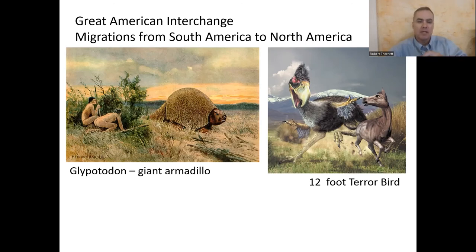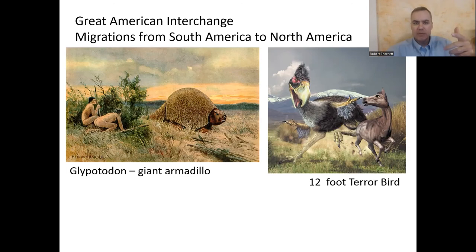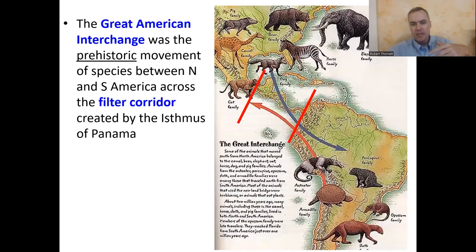They say humans were one of the main reasons that mammoths went extinct — humans hunted mammoths. So that's the Great American Interchange between North and South America, where Central America played the role of a filter corridor.